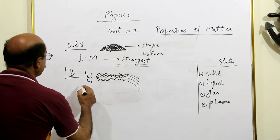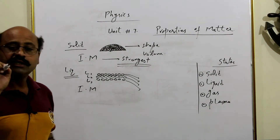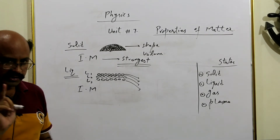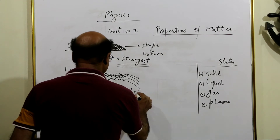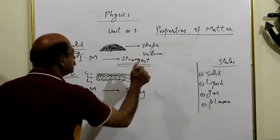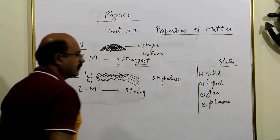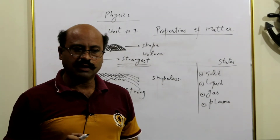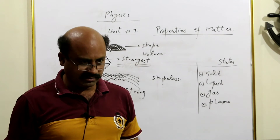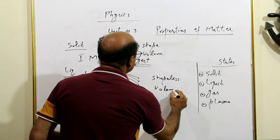Agar main yahan pe intermolecular forces ko categorize karun, toh main yahan pe ise strong ki category mein dalunga — strongest nahi, strong. In intermolecular forces ki strength mein kami ki wajah se jo liquids hain woh shapeless hote hain. Liquids ki shape nahi hoti, lekin jis bartan mein aap daalen, us ke andar un ka khaas volume zaroor banta hai. Yani is ki shape nahi hai lekin volume specific hai.